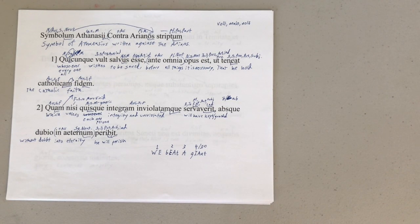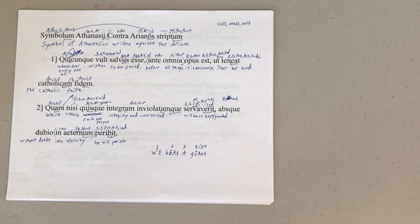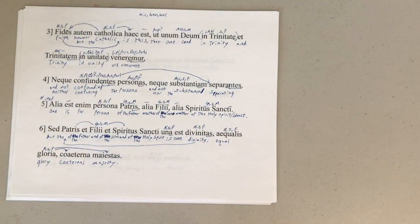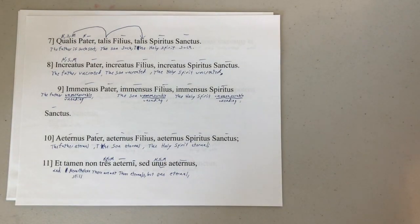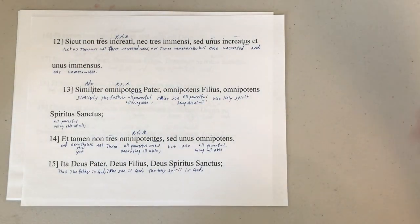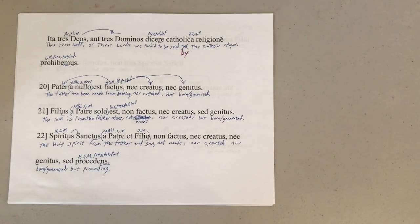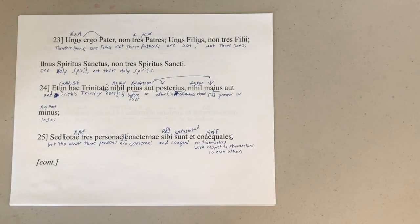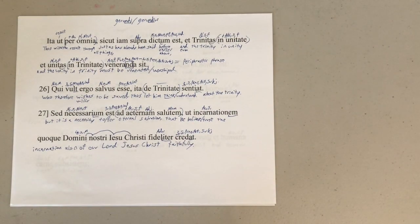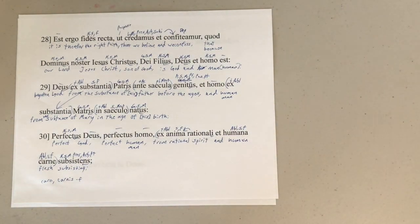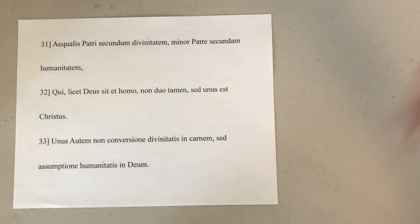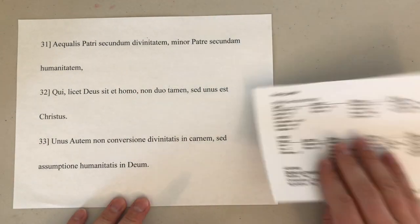Salutations and welcome. Today we're going to be taking a look at the Athanasian Creed, and I believe this is going to be verses 31 through 33. But first, last time on the Athanasian Creed — with a computer doing something in the background. And there we have it. Here's a rubric, everything that we're looking for as we go through the text. Let's go ahead and get started.